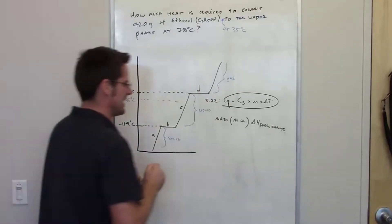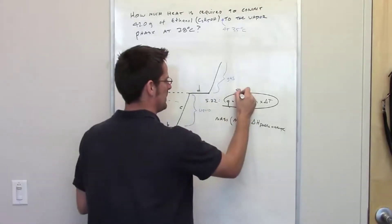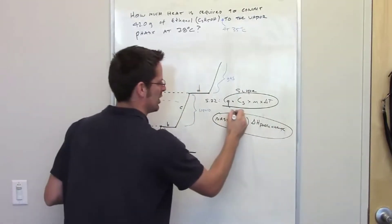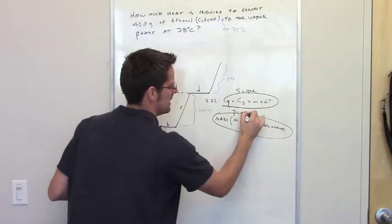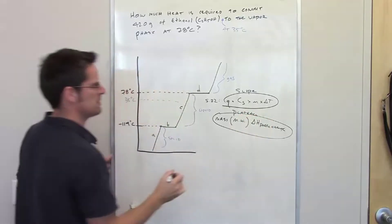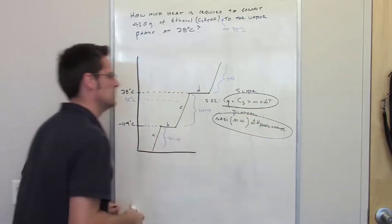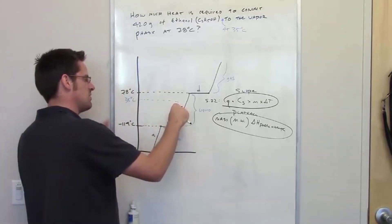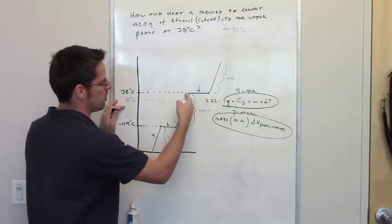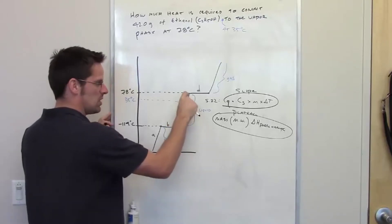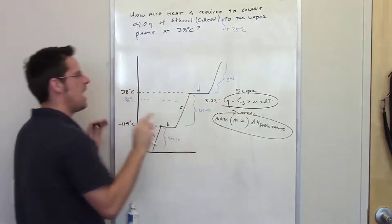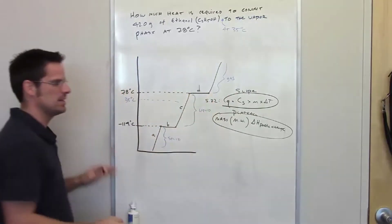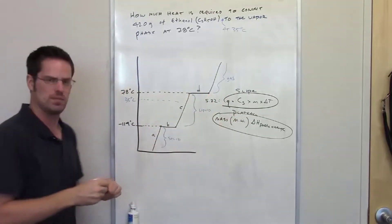Those are the two equations. The slope equation is used for going up one of these slopes; the plateau equation is used for going across a plateau. For this problem, we're going from 35 degrees Celsius, warming up to 78 — that's the slope portion, so we'll use the slope equation. Then we have to take it across plateau D all the way to the endpoint, using the plateau equation.